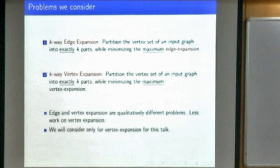The first problem is k-way edge expansion — basically you want to partition the graph into k parts where you want to minimize the maximum edge expansion of any given part. And k-way vertex expansion is a similar task except you want to minimize the maximum vertex expansion. These are qualitatively slightly different problems; there has been relatively less work on vertex expansion as compared to edge expansion. For the purpose of this talk I will mostly talk about the vertex expansion objective.